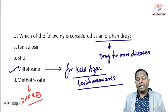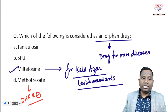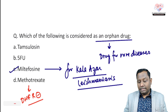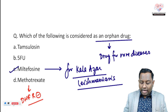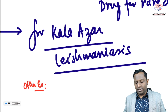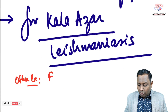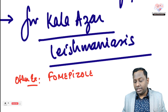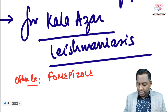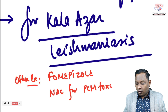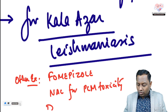Methotrexate is a dihydrofolate reductase inhibitor — it is not an orphan drug because it is used in many conditions such as rheumatoid arthritis, psoriatic arthritis, and osteosarcoma. 5-Fluorouracil is also a widely used anti-cancer pyrimidine analog. Other orphan drug examples include Fomepizole — the antidote for methanol poisoning — and Acetylcysteine for paracetamol toxicity, both of which have orphan drug status.